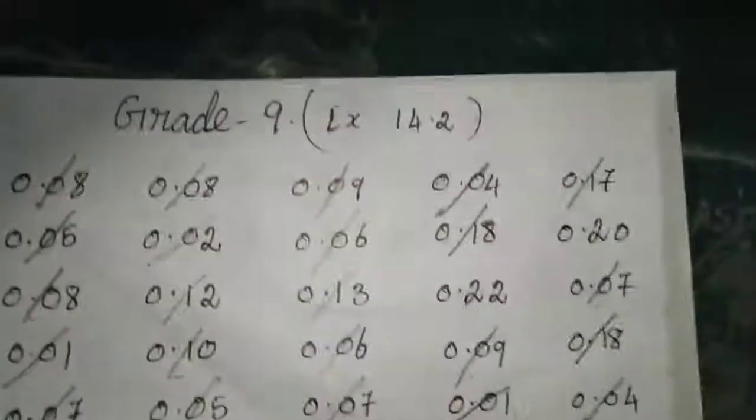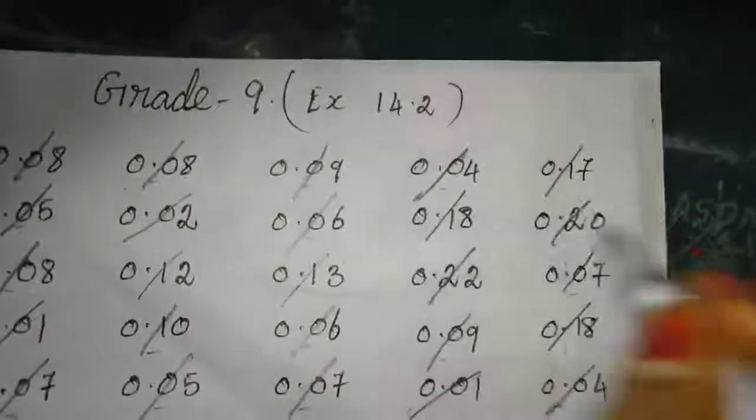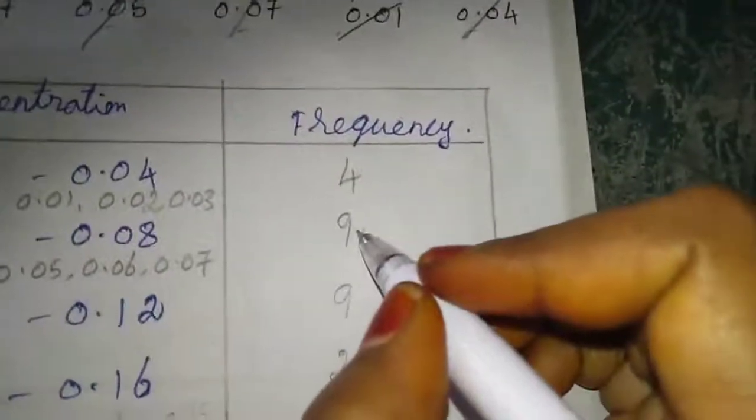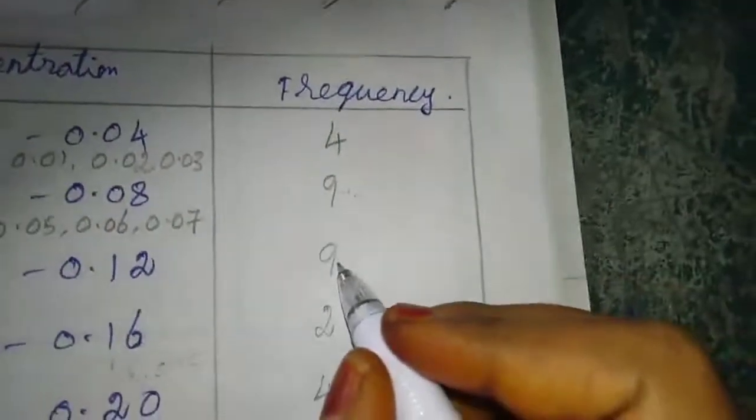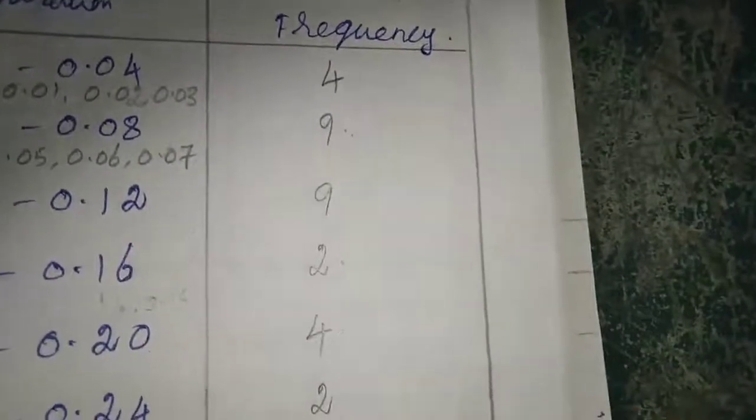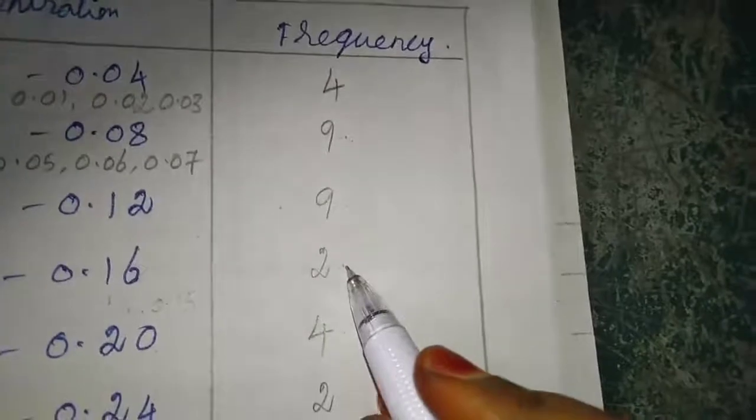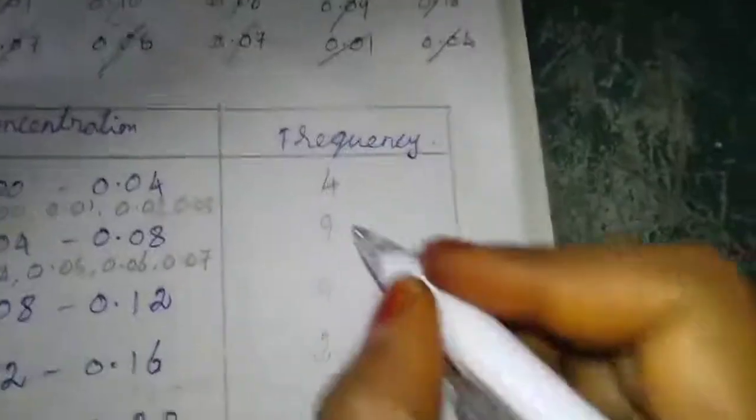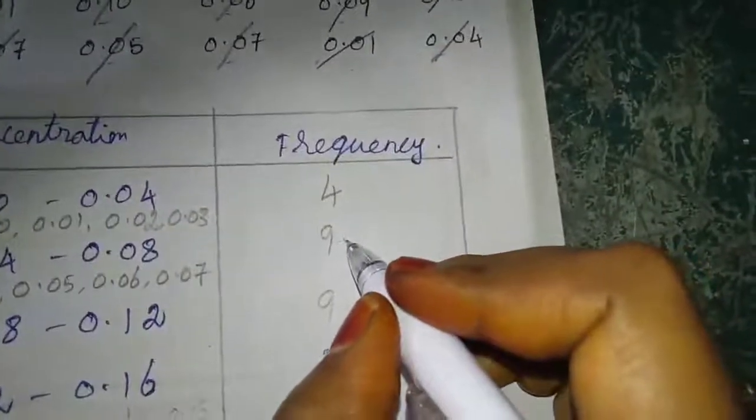Balance 0.20 to 0.24, see here, nothing here, 1, 2, only 2, so 2. If you add this fully you will get 30. See here: 4 plus 9 is 13, 13 plus 9 is 22, 22 plus 2 is 24, 24 plus 4 is 28, 28 plus 2 is 30. This is the frequency distribution table for the 5th sum.